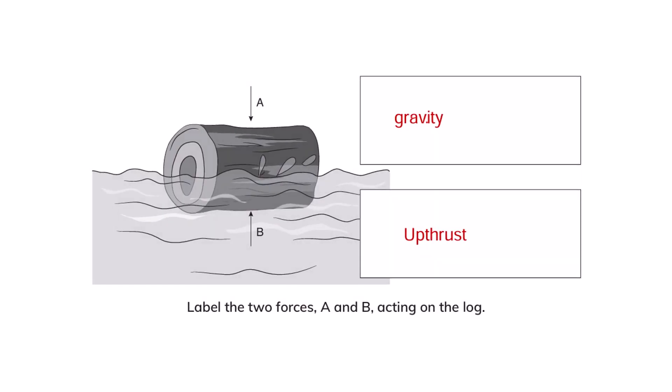Label the two forces A and B acting on the log. Force A is gravity that is pushing the log downwards, and force B is upthrust that is pushing the log upwards. Because of these two forces, the log is floating on water.